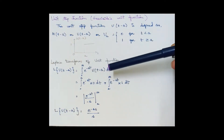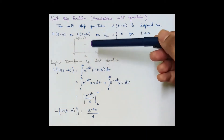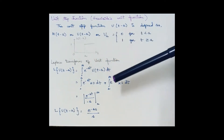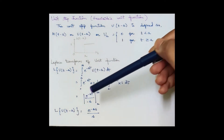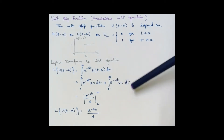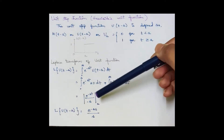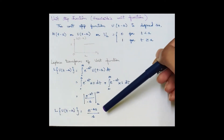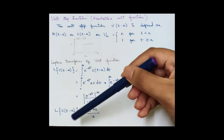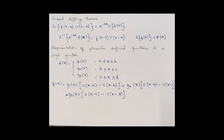To find the Laplace transform, we use the general formula: integral from 0 to infinity of e^(−st) · u(t − a) dt. Since u(t − a) is 0 for 0 to a and 1 for t ≥ a, we split the limits. The first integral vanishes and integrating the second gives e^(−st)/(−s) evaluated from a to infinity, yielding the Laplace transform of u(t − a) = e^(−as)/s.